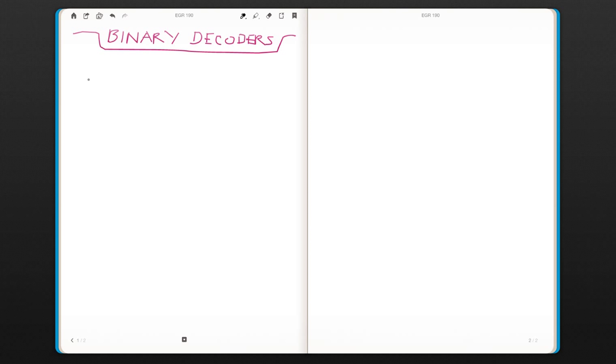We will discuss binary decoders in this video. A decoder is different than what we have been doing. It has its inputs but it also has multiple outputs.